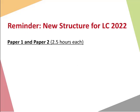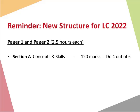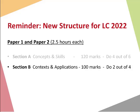A quick recap: Paper 1 and Paper 2 are both 150 minutes. Section A — concepts and skills — is 120 marks; 30-mark questions, choose four of six, spending 18 minutes each. Section B — context and applications — is 100 marks; two 50-mark questions chosen from four, spending 30 minutes each. That gives you 10 minutes at the start to choose questions and 8 minutes at the end as a safety net.